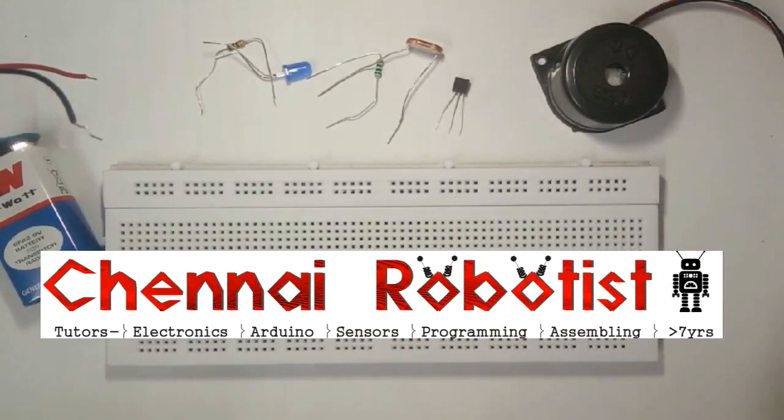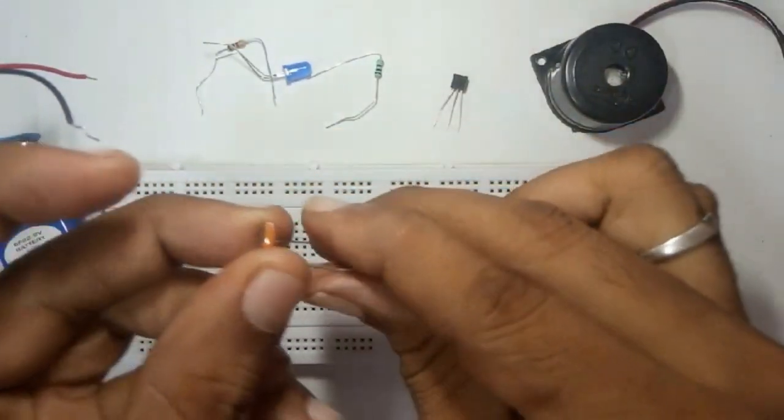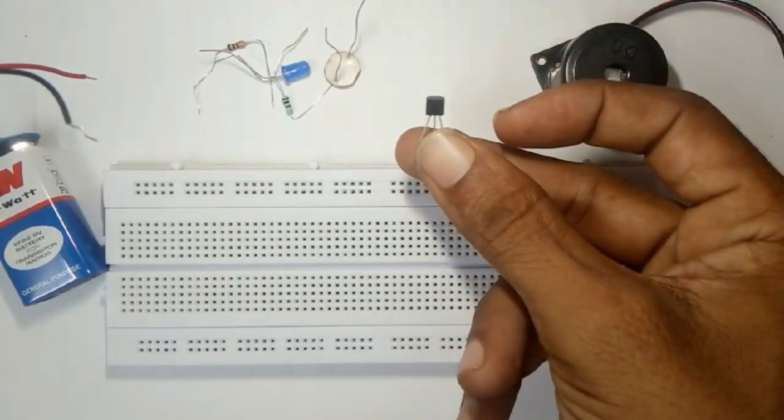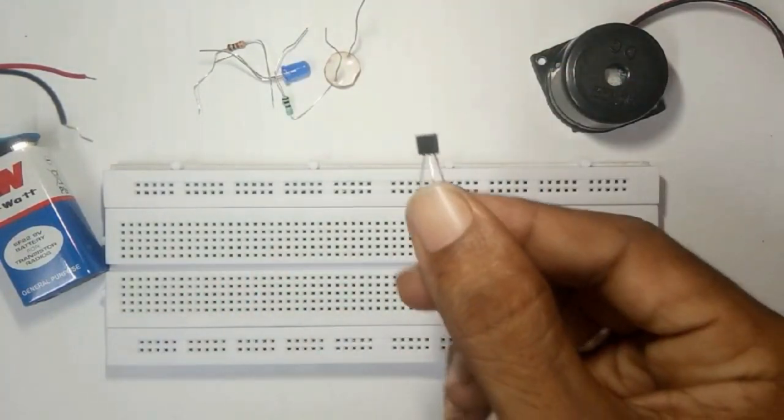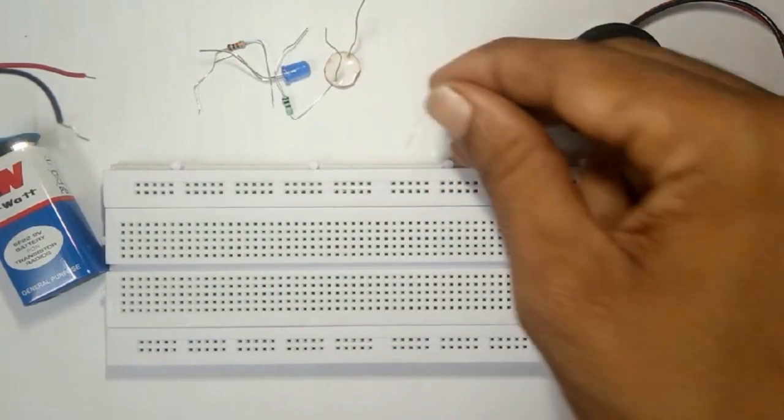Hi, hello, welcome to our YouTube channel. Today we are going to see how to use this LDR light dependent resistor with the BC547 transistor. So you know how this BC547 transistor works, so I'm going to use this BC547 to switch on this LED.